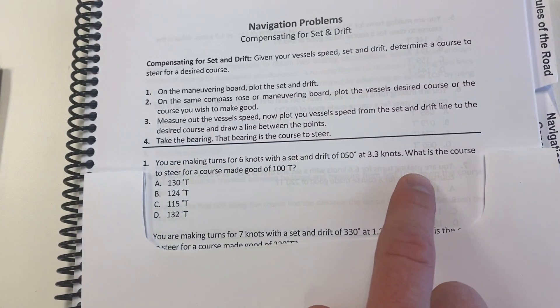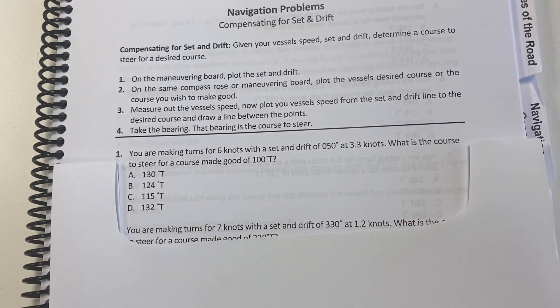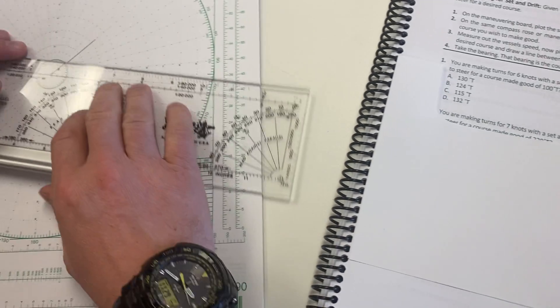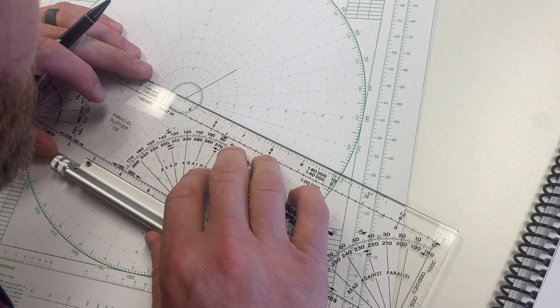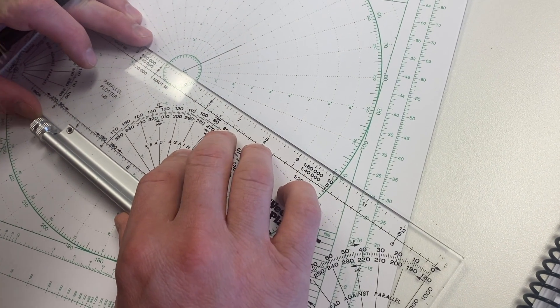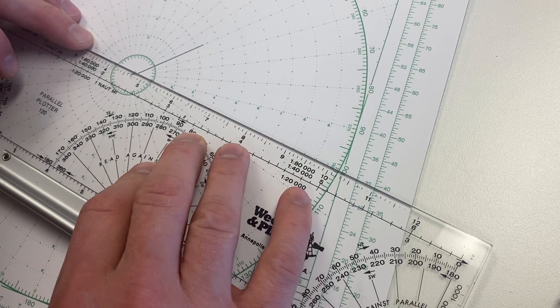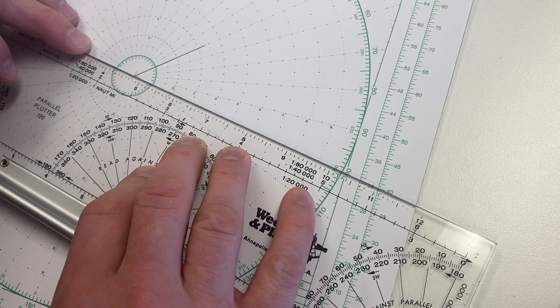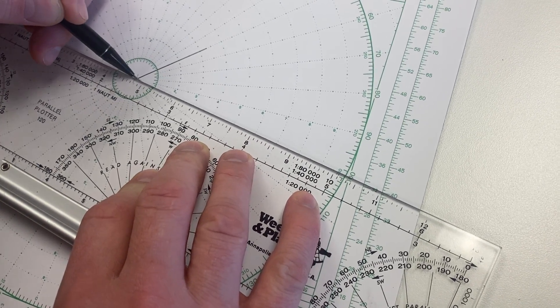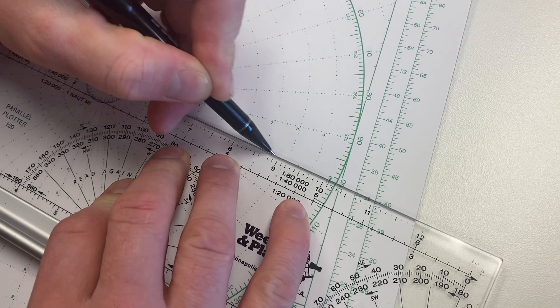It says we want to make a course good of 100 degrees true. So we're going to take our 100 degrees true and plot that from the center all the way out to the outer edge. Make sure we're actually on 100, going all the way out to the very end here.